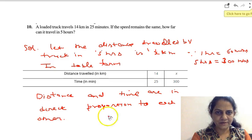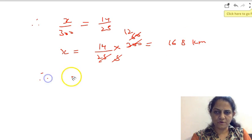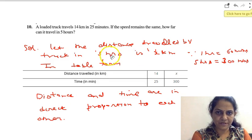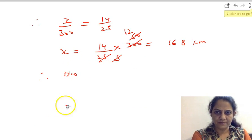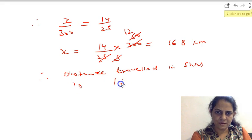So 168 km is the distance travelled. Therefore, distance travelled in 5 hours is 168 km.